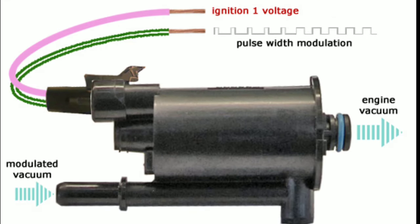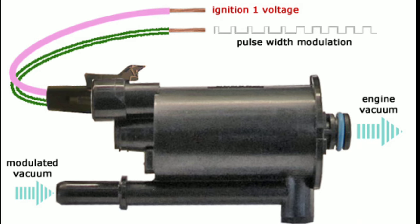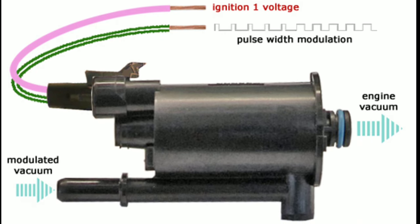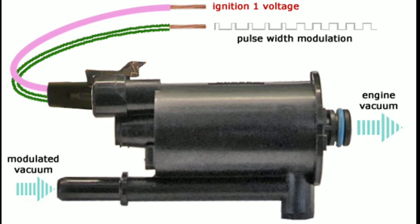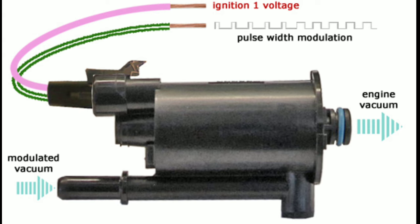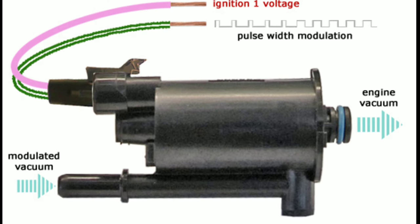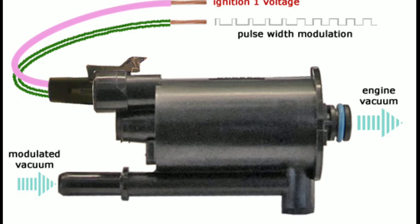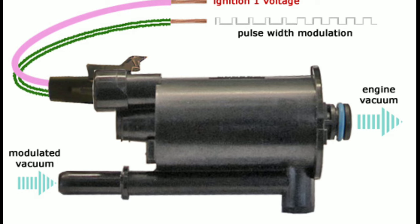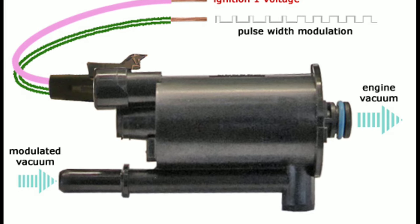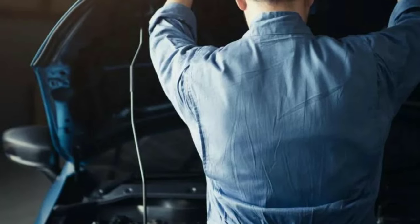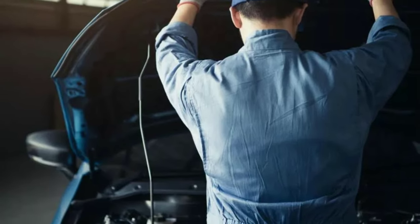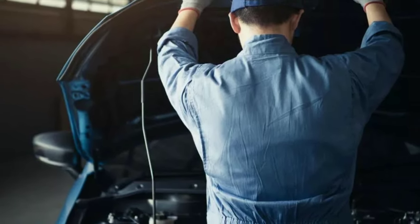In the vacuum system, the gasoline tank is evacuated, which prevents fuel vapors from escaping. The intake manifold of the engine is responsible for producing the vacuum, which is then used to suck the fuel vapors from the charcoal canister into the engine so that they can be burned.